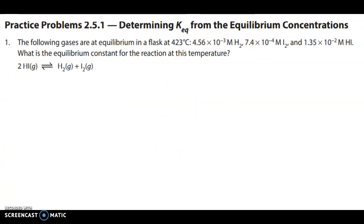Let's start taking a look at some examples. If you want to pause the video, try these three questions out on your own and then see how you do. We are going to take a look at this question. It says the following gases are at equilibrium in a flask at 423 degrees Celsius. They're giving us the concentrations of our components.